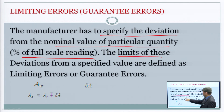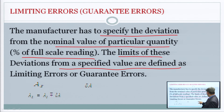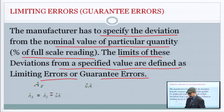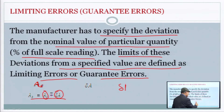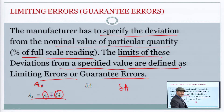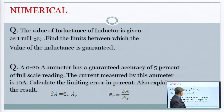Manufacturer को specify करना होता है कि किसी quantity की nominal value से deviation कितना होगा। यह percentage of full scale reading के रूप में दिया जाता है — true value पर नहीं। The limits of these deviations from a specified value are defined as the limiting error or guarantee error.